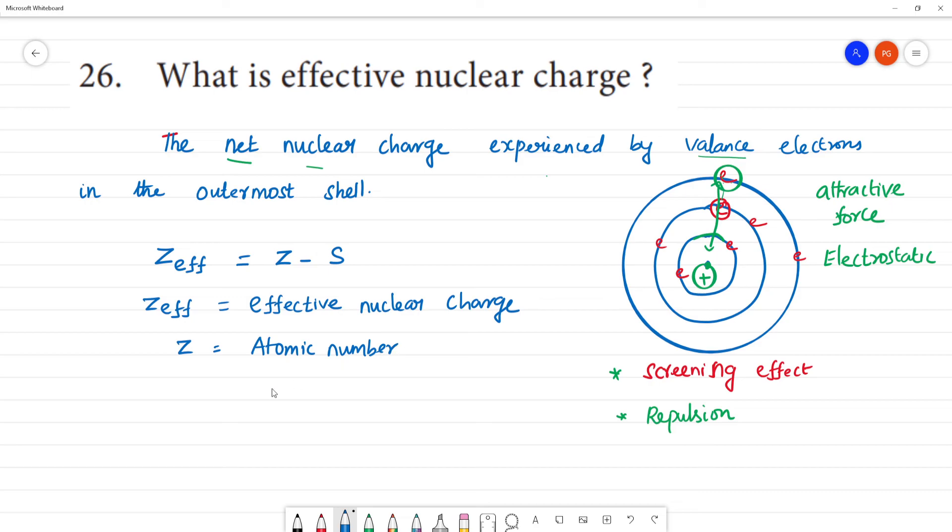Atomic number, atomic number. Next, yes, screening constant, screening constant. This is the value from Slater rules. Slater rules use to calculate.